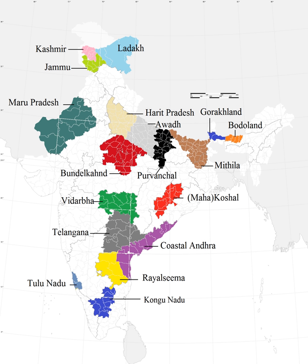Tribals constitute 64% of the total population of Dindori district, and 57% for Mandla. The Gondwana Gantantra Party was established in 1991 with the objective of struggling for the creation of a separate Gondwana state comprising regions that were ruled by Gonds. The Gondwana Gantantra Party has since divided into numerous factions such as Rashtriya Gondwana Party and Gondwana Mukti Dal.